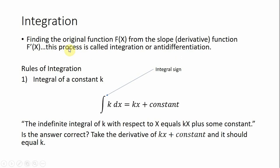A little bit about integration. Integration is finding the original function from the slope or derivative function. For example, we may have marginal cost, which is a slope function, and we might be interested in finding total cost, which is the original function. So we can go from marginal cost to total cost through the process of integration. Similarly, marginal revenue is a slope function, and we could go from marginal revenue to total revenue using the process of integration.